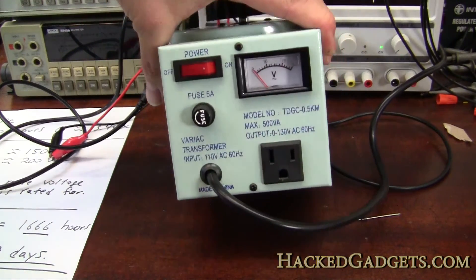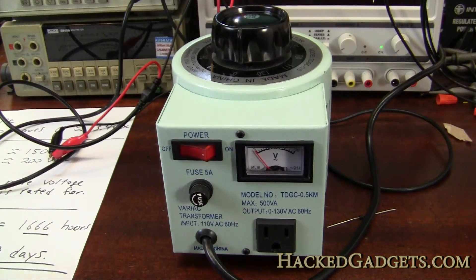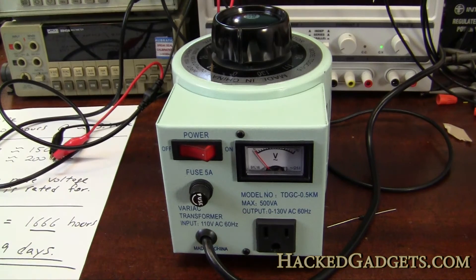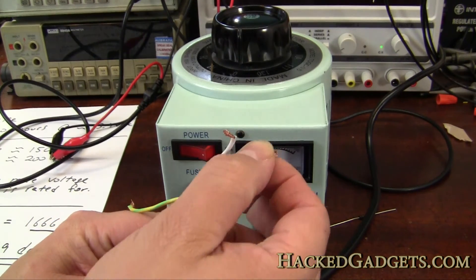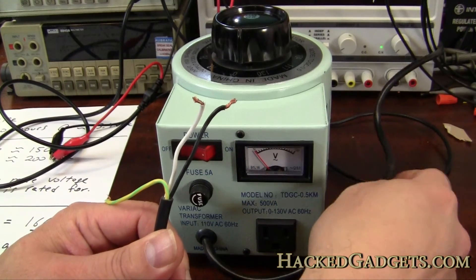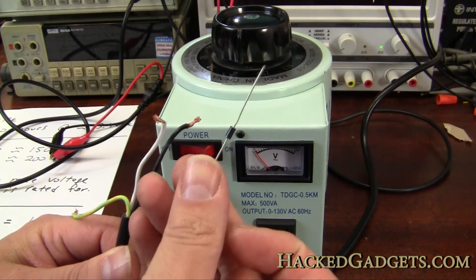We're going to hook it up to the Variac right here that goes up to 150. We have a plug output. We're going to plug in the other end of our plug here. This is going to be 150 volts AC coming out of here. That's really dangerous for the LED like this. So we're going to rectify it with a diode.